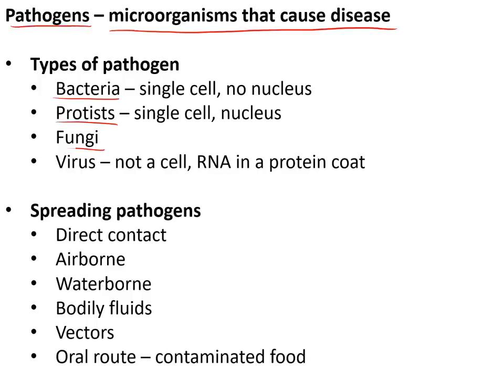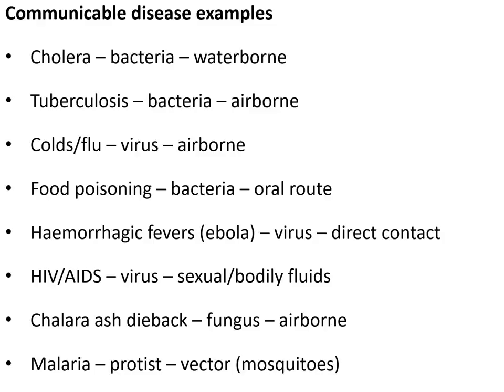Pathogens can be spread in a number of ways: direct contact, through the air, through contaminated water, through contaminated body fluids or sexual transmission, through vectors — animals that bite and pass on disease — and through the oral route of eating contaminated food. For example, cholera is caused by bacteria, is waterborne, and leads to severe diarrhoea. Tuberculosis is caused by bacteria, is airborne, and leads to inflammation of the lungs, coughing up blood, and eventual death.